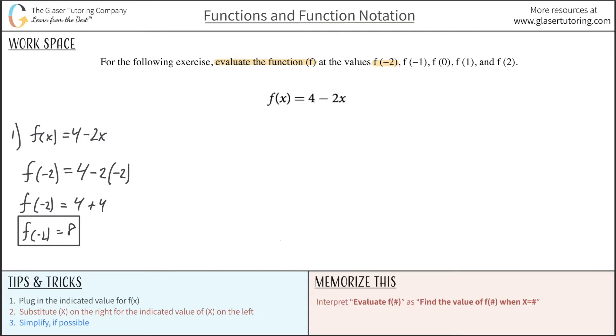Now the second one, it says f of negative 1. So let's do this one on out, and then maybe we'll do the rest pretty quickly. So rewrite the formula. f of x is equal to 4 minus 2x. Now, plug in the indicated f of x value. So they want us to find f of negative 1. So now plug that in for f of x. So this is f of negative 1. And now anywhere on the right-hand side that you see an x, you're going to plug in negative 1 for it. And that's all. So this is 4 minus 2 times negative 1.